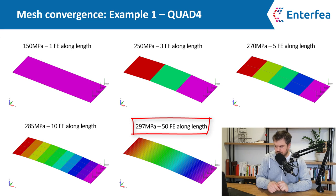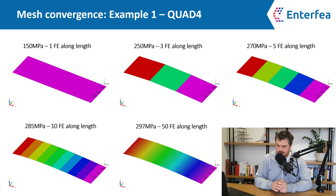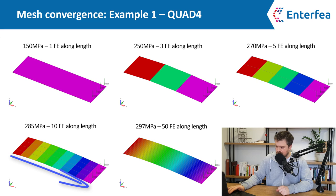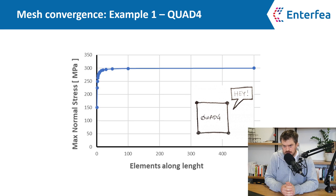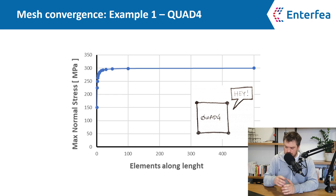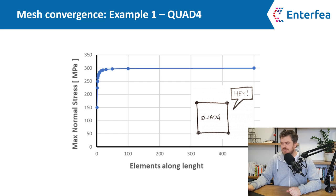If we put that on a chart, measuring the number of elements along the long edge — keeping them square so the size also reduces in the perpendicular direction — you will see something like this. Looking at that, we can quite easily draw a conclusion that the answer is converging at 300 megapascals. It's quite clear from the chart that the more elements we add, the closer we are to 300 megapascals, and it looks almost horizontal at the end. So let's check if the answer even makes sense — it's far better to verify yourself.